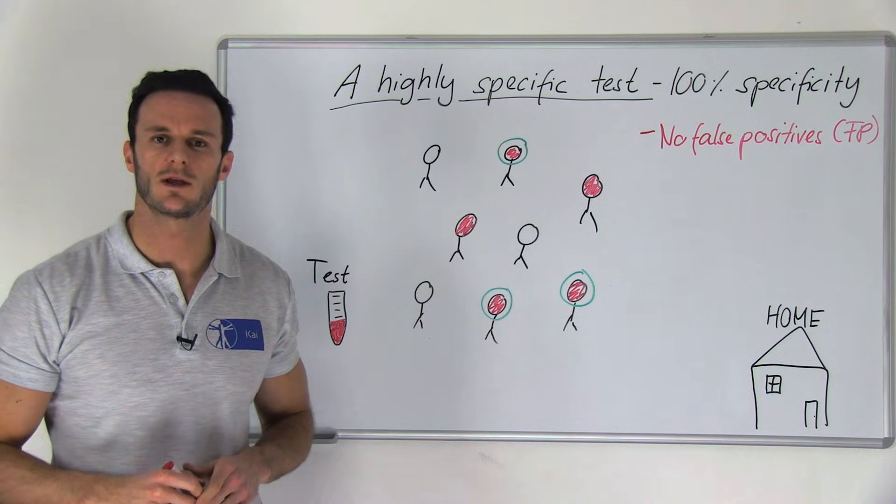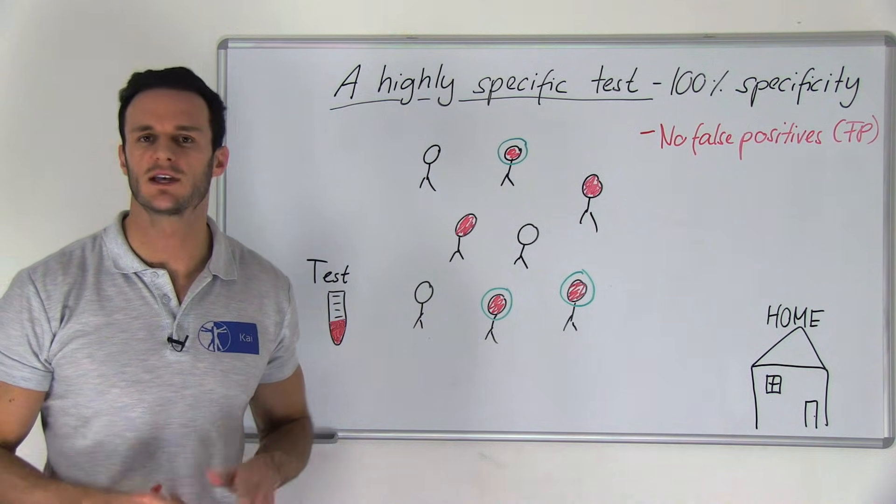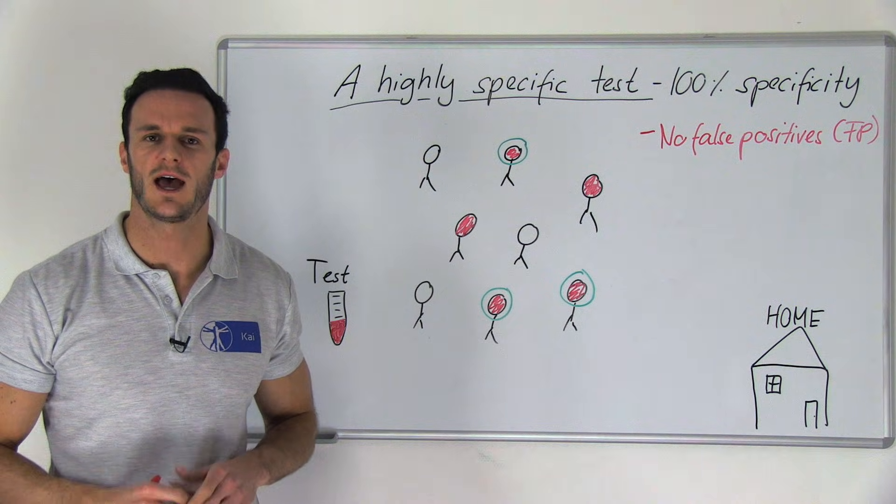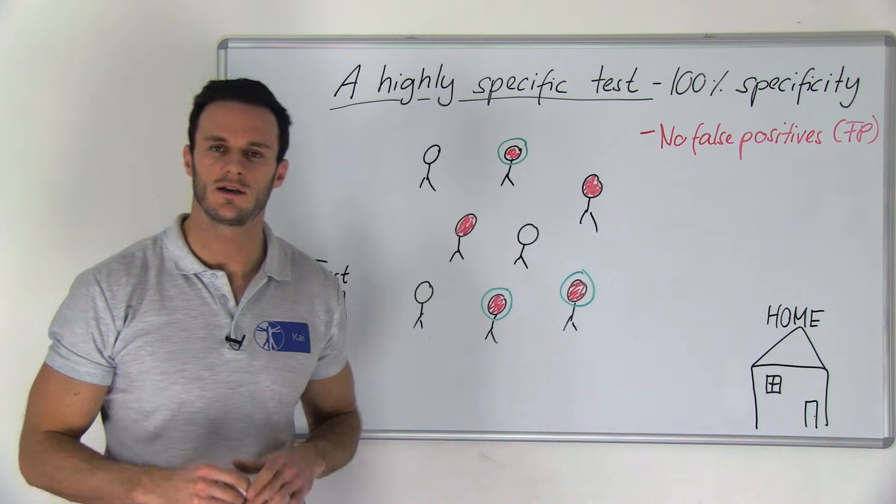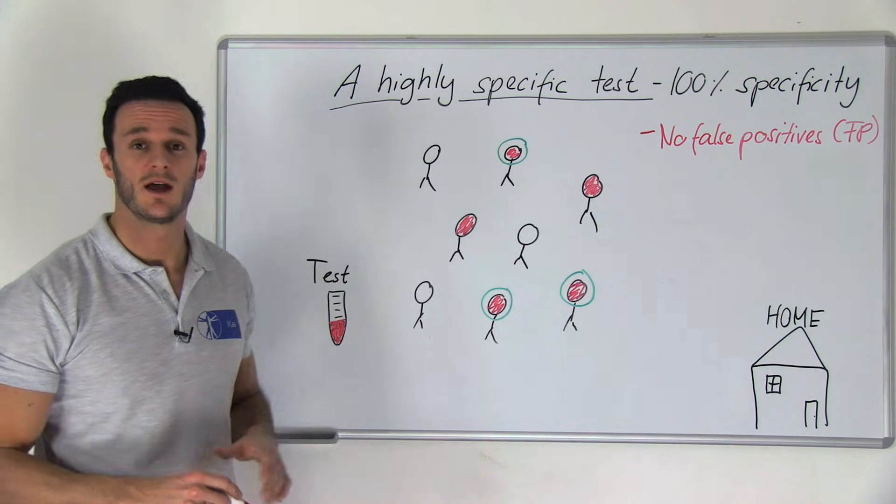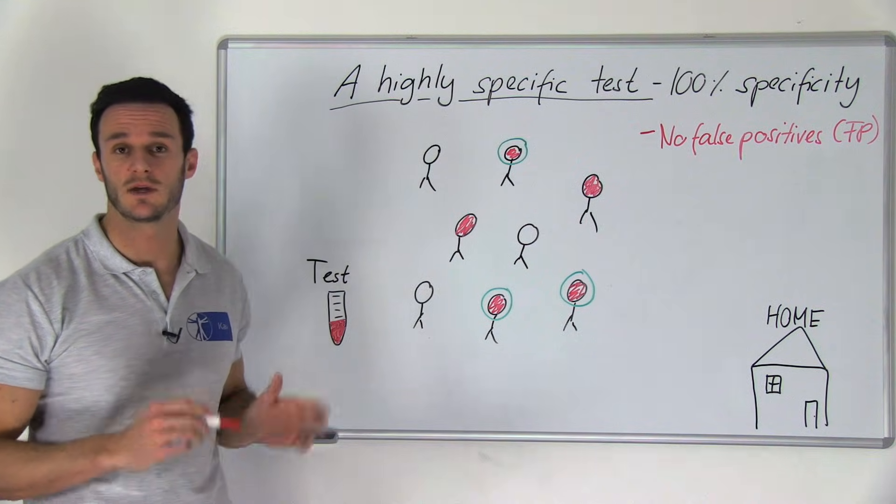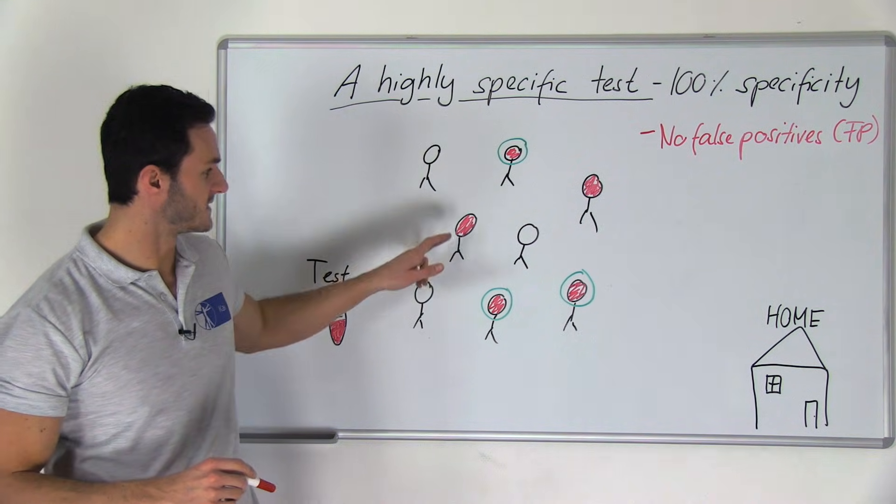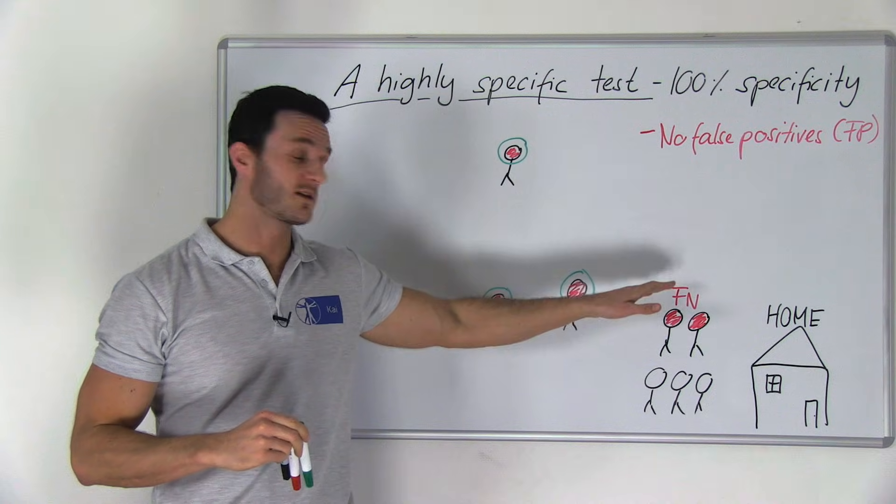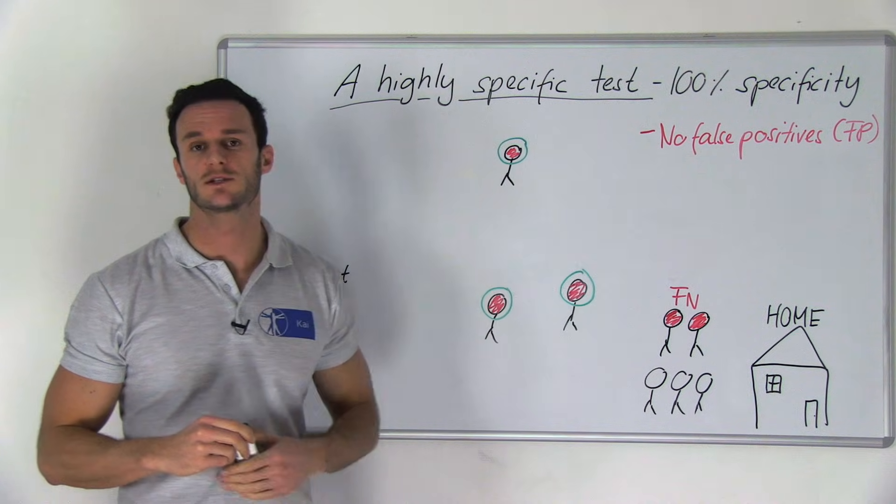In this case when a test is positive, you can be 100% sure that this person has the disease. However, like you can see in this example here, a specific test can miss people that have the disease. So they are going to be sent home with a false negative result.